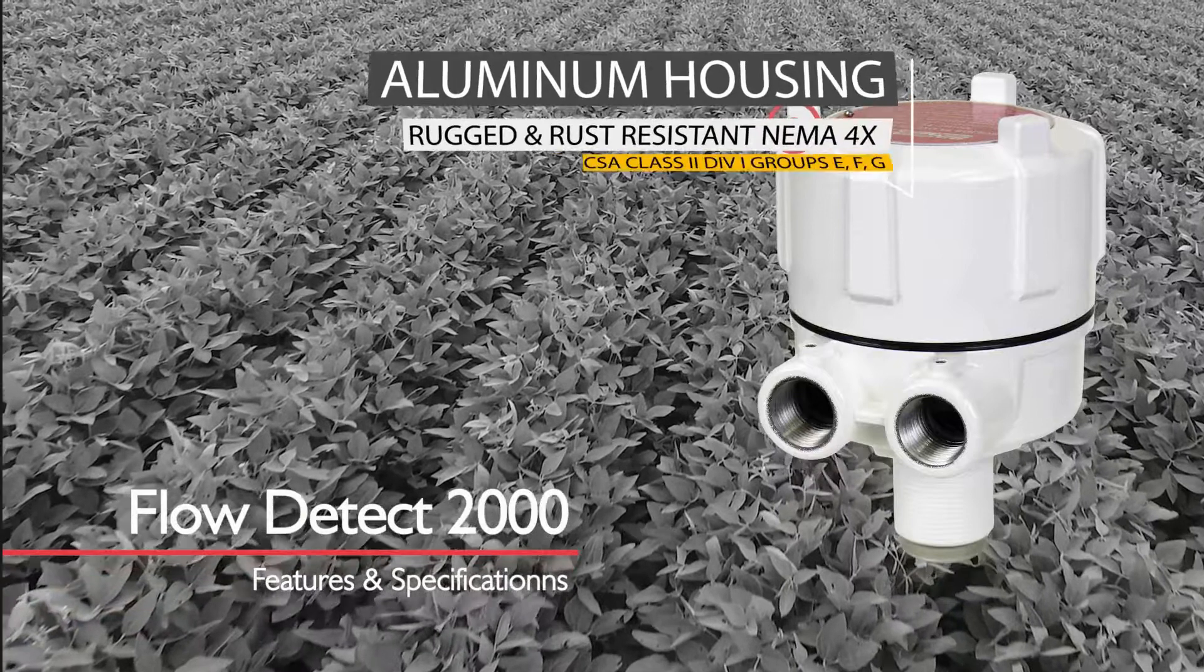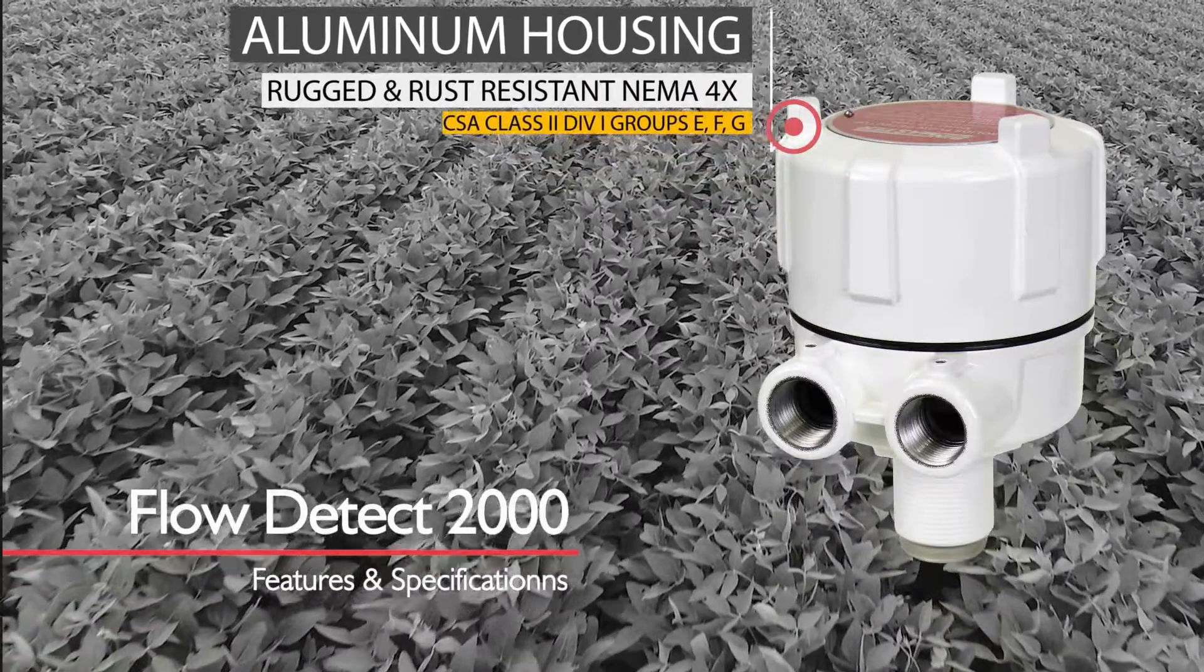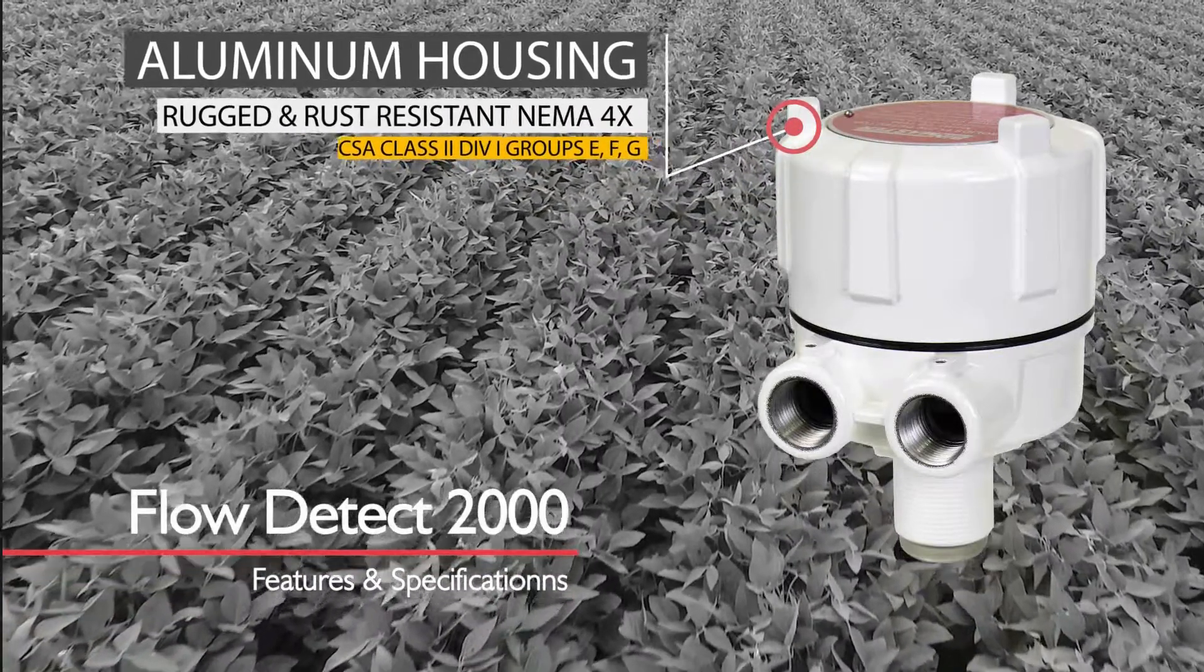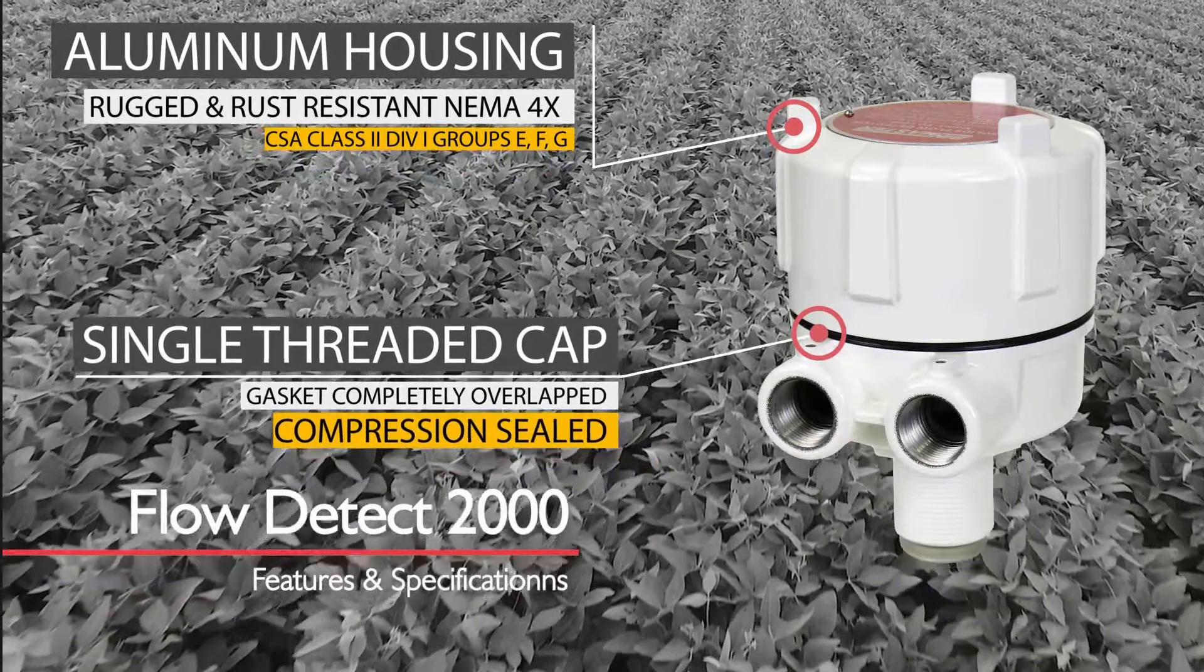Let's talk about the features of the Flow Detect 2000. It comes in a very industrial aluminum housing, CSA certified class 2 groups E, F, and G.